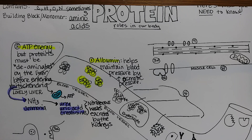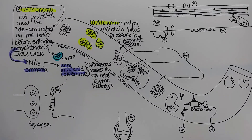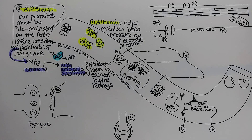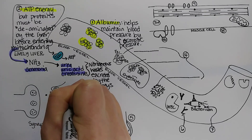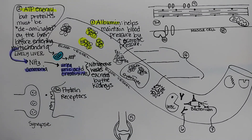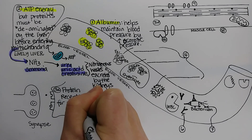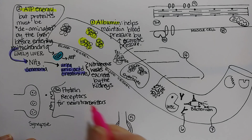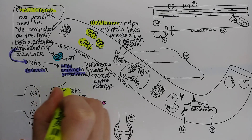Number three is down here. What this represents is a synapse — for example in your brain, this could be the end of one neuron talking to another neuron. Proteins serve as receptors, and if we're talking at a synapse, then specifically I'm talking about receptors for neurotransmitters. The functions themselves I'm putting in yellow, so this is our third one: proteins can serve as receptors.